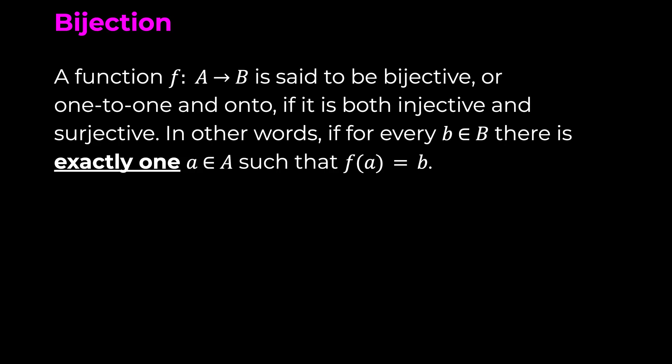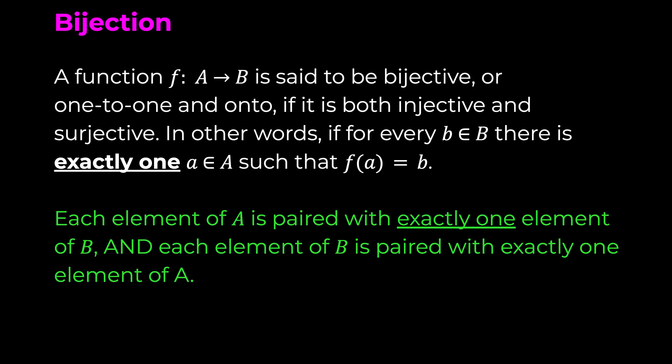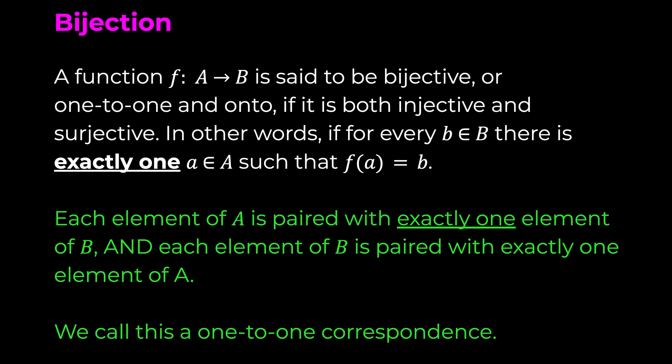Now let's look at what a bijection is. A function f such that A is mapped to B is said to be bijective or one-to-one and onto if it is both injective and surjective. In other words, for every b in B there is exactly one a in A such that f(a) equals b. Each element of A is paired with exactly one element of B and each element of B is paired with exactly one element of A — there are no unpaired elements. We call this a one-to-one correspondence. Do not confuse this with an injection, which is simply a one-to-one function.